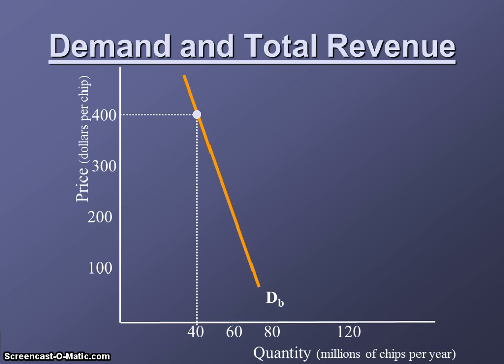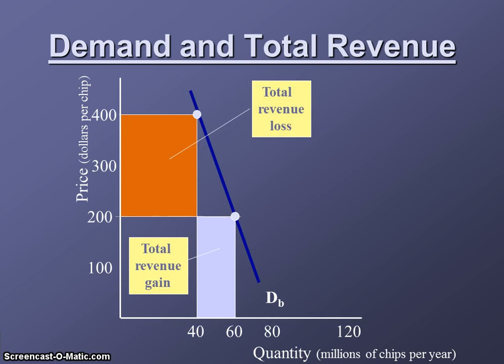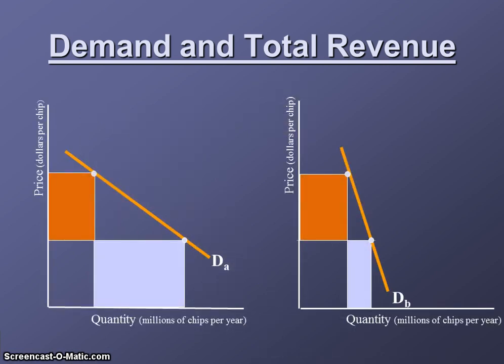Now compare that to this alternate demand curve. According to this data, 40 million chips per year will be sold at the price of $400, but if the firm were to drop the price to $200, they would only increase their sales by 20 million chips per year. So if this were the demand curve for the product, clearly dropping the price would not be an intelligent move because the total revenue loss is greater than the total revenue gain. Let's look at these two curves side by side.